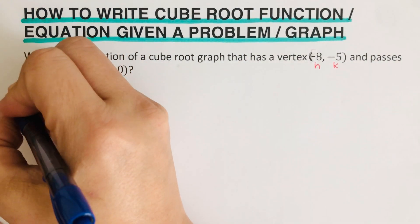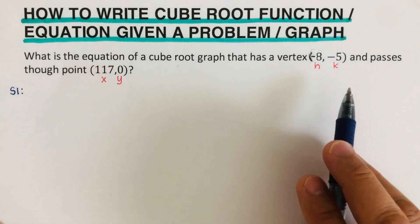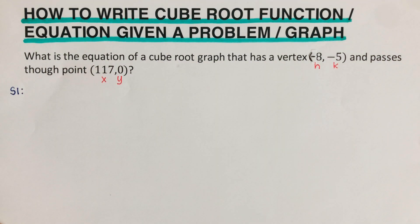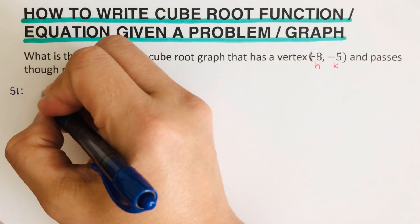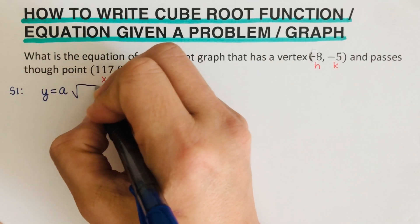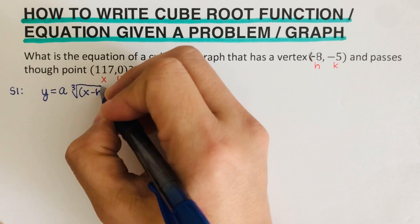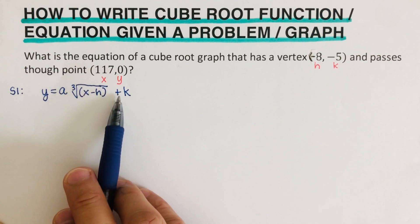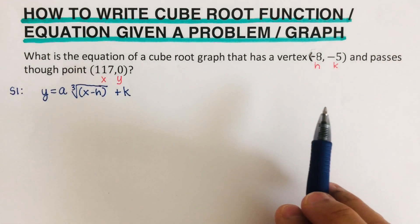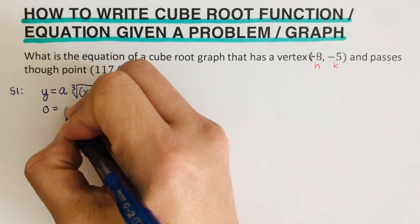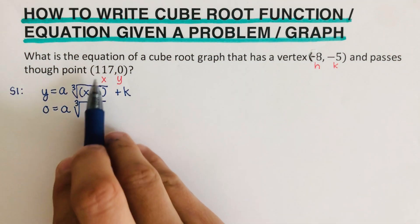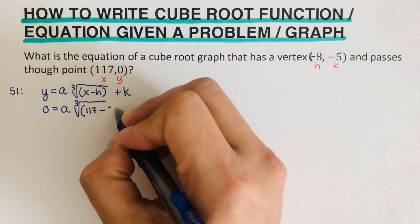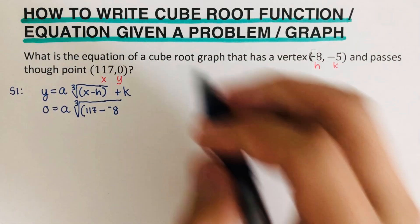We are going to move on to the first step. After we label the points, we plug the values of h, k, x, and y into the graphing form of a cube root function. The equation in graphing form is y equals a times the cube root of x minus h, plus k — where x minus h is inside the cube root sign and k is outside. So our y is 0, equal to a times the cube root of 117 minus negative 8, and our k is negative 5, so we write minus 5.